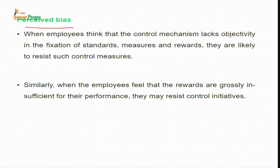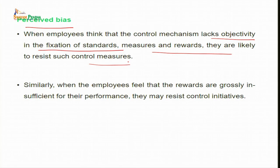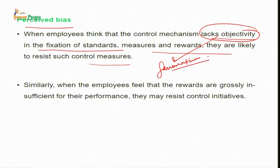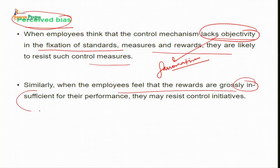The second reason is perceived bias. When employees think that the control mechanism lacks objectivity in the fixation of standards, measures and rewards, they are likely to resist such control measures — they may feel there is favoritism or nepotism. Similarly, when employees feel that rewards are grossly insufficient for their performance, they may resist control initiatives, feeling they are not being given what they actually deserve.